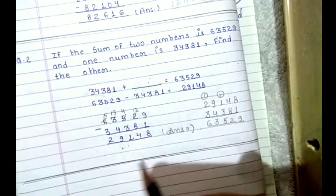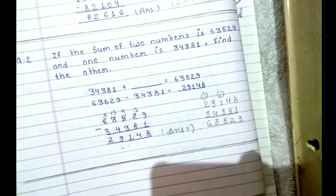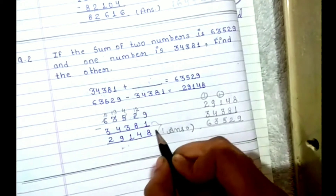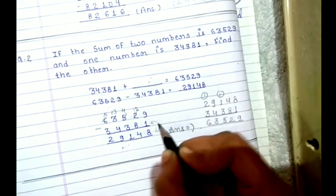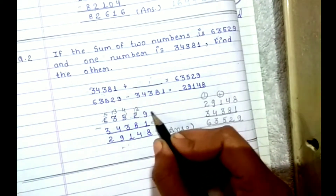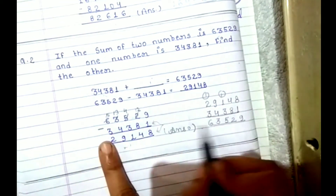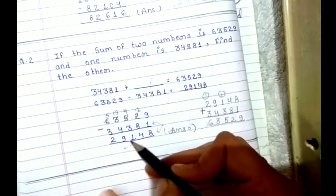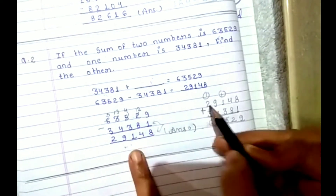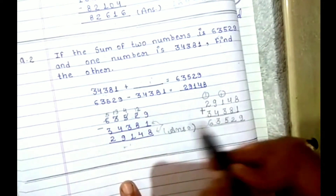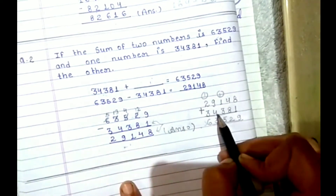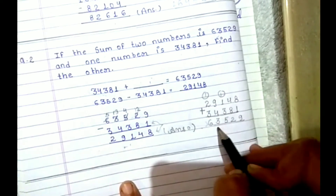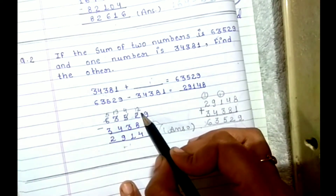अगर अपन को check करना है कि जो अपन ने answer निकाला है वो correct है कि नहीं, तो इन दोनों को अपन plus कर देंगे। देखो आपका ये और ये same आया है। अपनने पहले ये वाला number write किया, उसके बाद ये number write किया, और जो result आया वो ये वाला number आ गया।